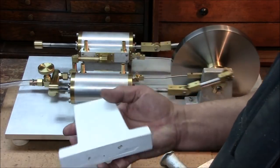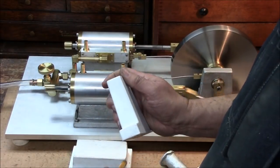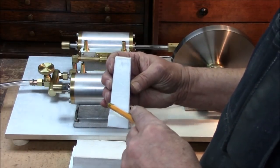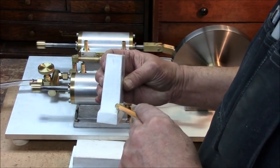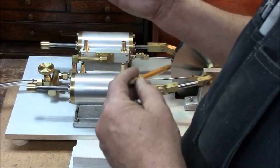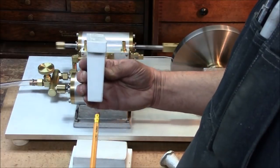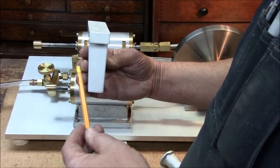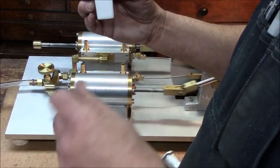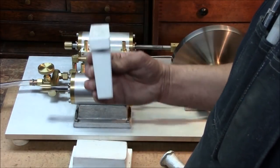This is the pattern for the flywheel support. You can see that it's got draft on it. It's thicker at this end and thinner at this end. It sits in the mold like this so when you pull the pattern out of the mold, it comes out without bringing a lot of sand with it.